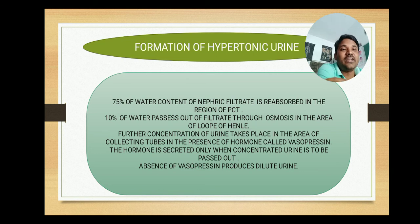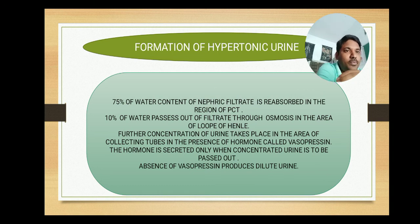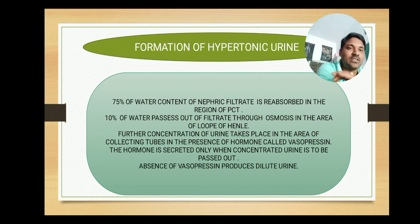When water is not sufficiently present in the body, our body will try to excrete concentrated urine by reabsorbing maximum water to avoid dehydration. This makes the urine much more concentrated. Conversely, absence of vasopressin produces diluted urine — when we drink sufficient water and water levels are adequate, the hormone is not produced because there is no need to reabsorb much water or concentrate the urine.